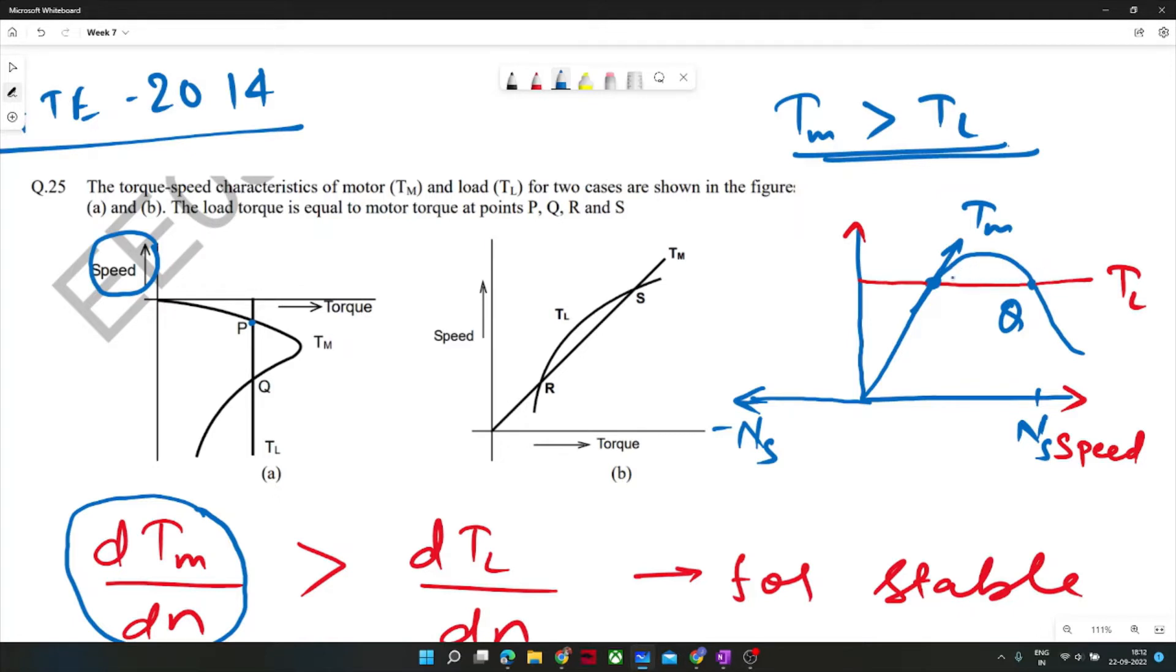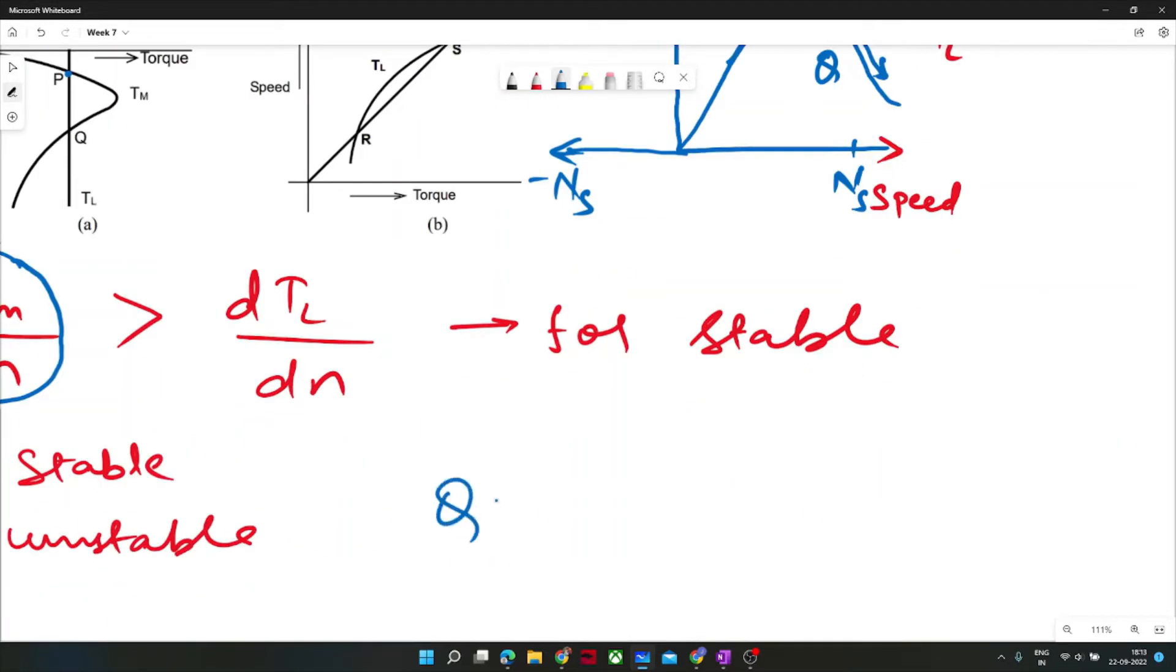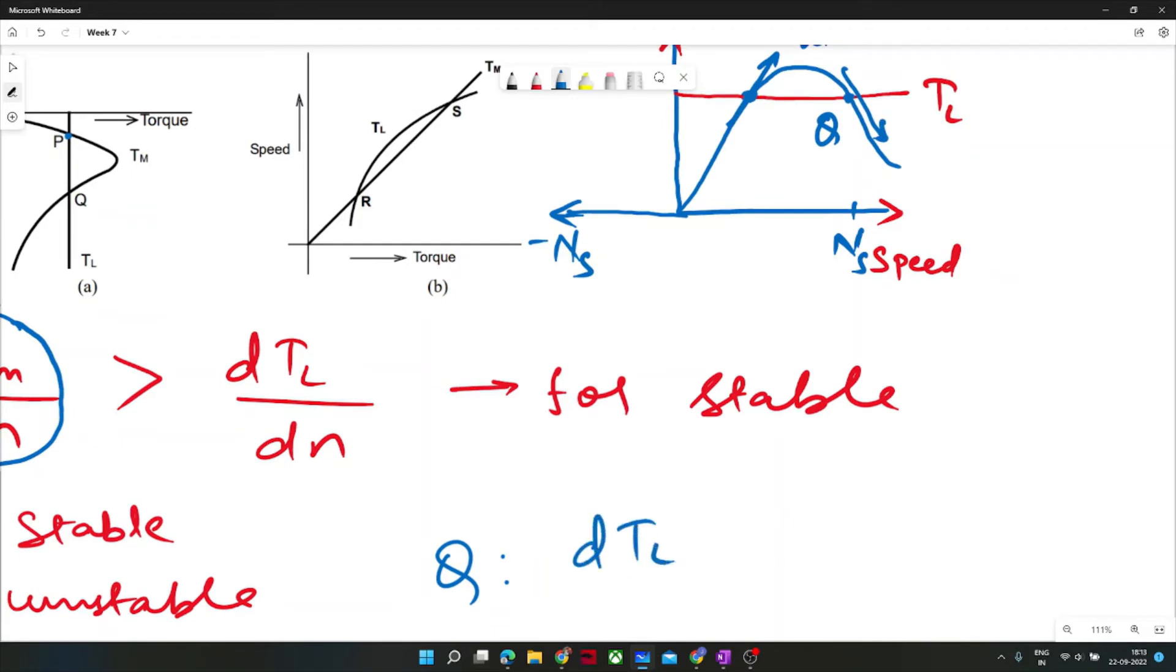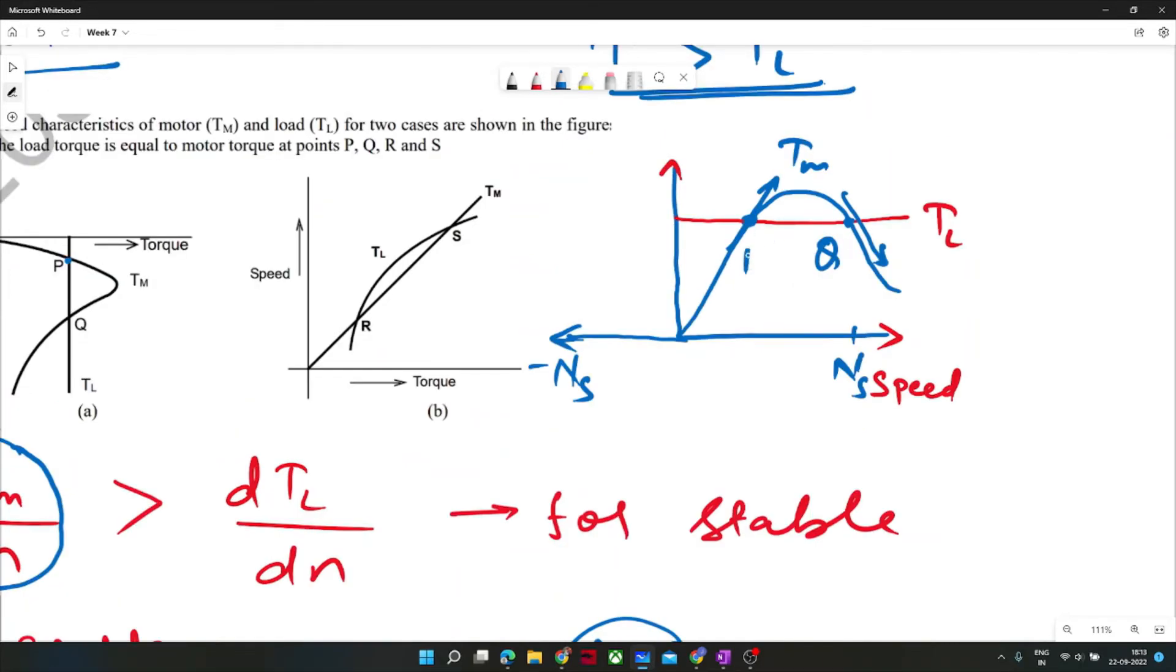At Q, dTm/dn is less than dTL/dn because at Q, dTL/dn is zero and dTm/dn is negative. So dTL/dn is bigger, and if this slope is higher than the motor slope, the motor would be unstable. Therefore, Q point is unstable and P point is stable.